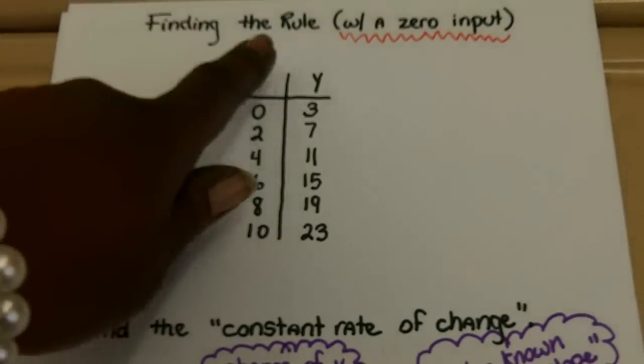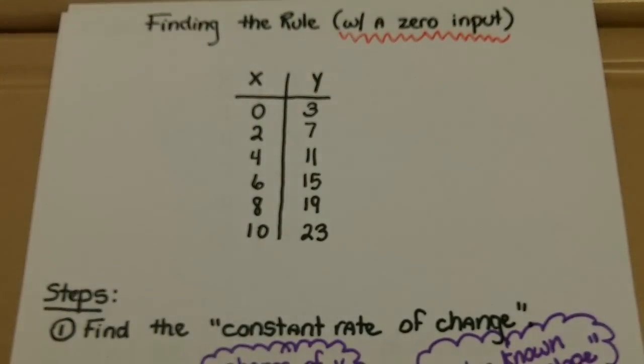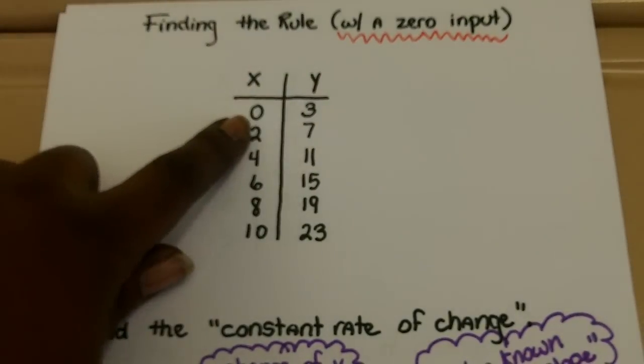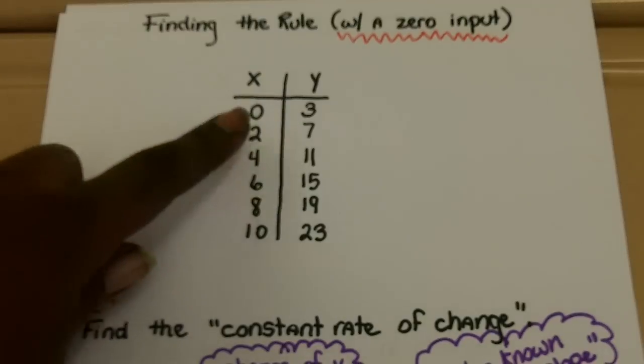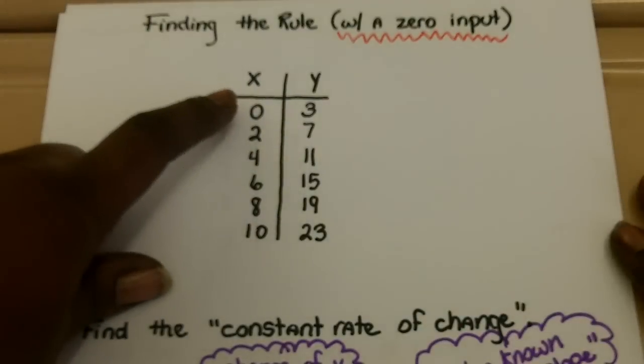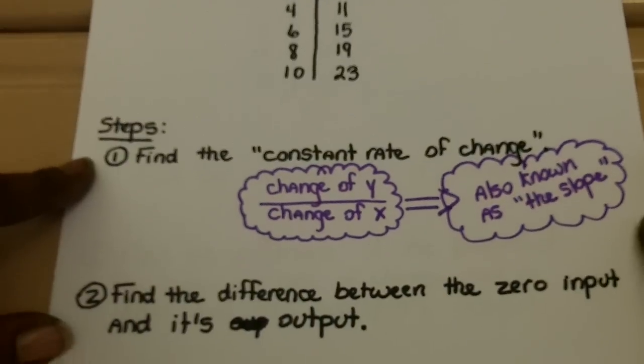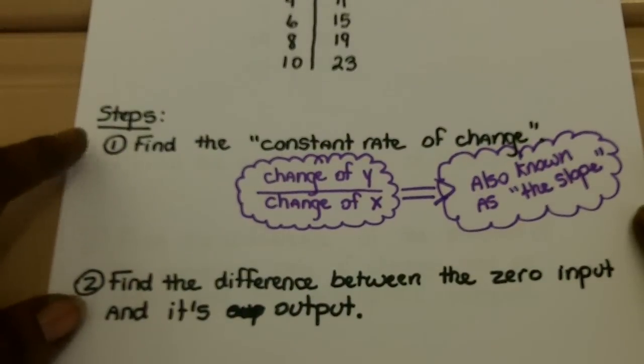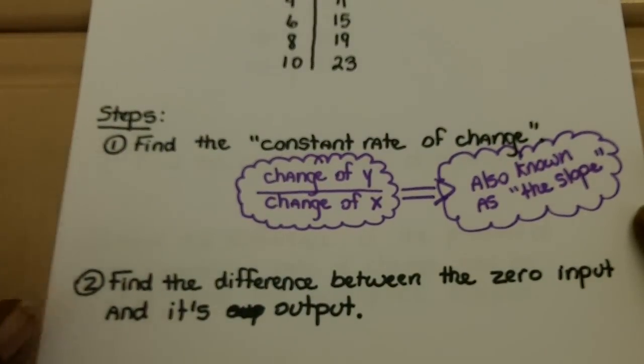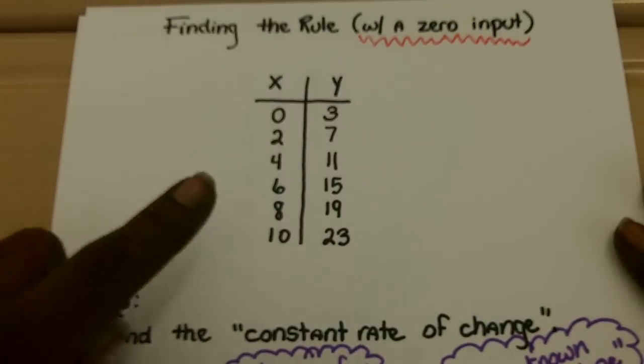They may ask you to find a rule with having a zero as an input. As you see here, we have our inputs and our outputs, and the very first input is zero. So there's two steps that we are going to follow in order to find the rule using the function table.